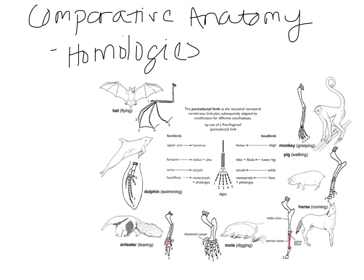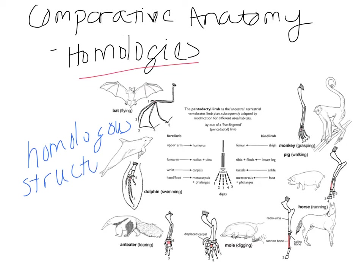Some more evidence for the theory of evolution is our comparative anatomy. With comparative anatomy, we're looking for what are called homologies — homologous structures. These are structures that are going to be very similar, and we may find them embryologically, in actual anatomical structure, or in DNA sequences. A homologous structure is one that has the same or very similar structure, but a different function.